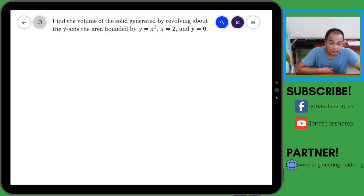For this one we are going to answer the problem posted on the whiteboard. Find the volume of the solid generated by revolving about the y-axis the area bounded by y equals x squared, x equals 2, and y equals 0.